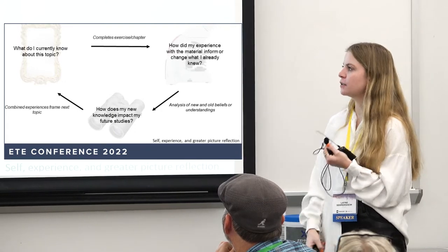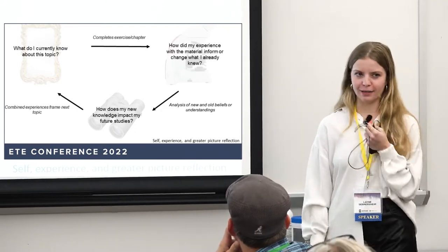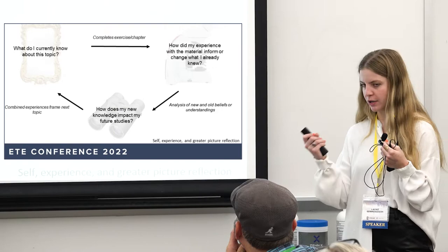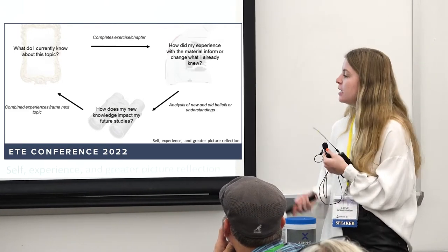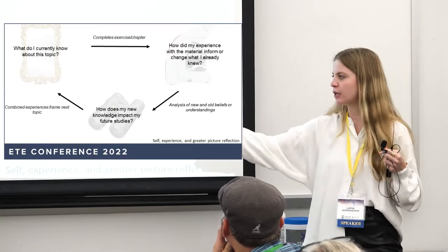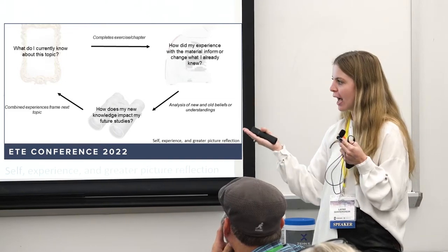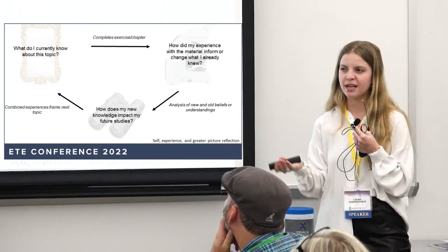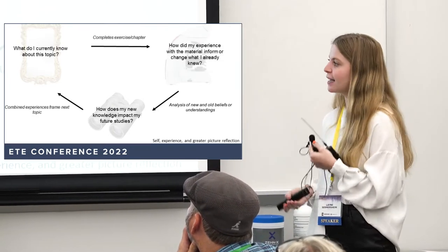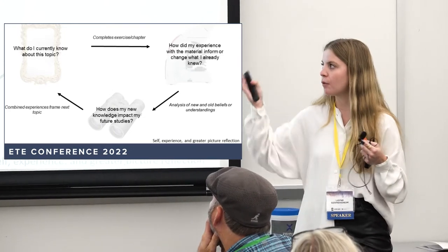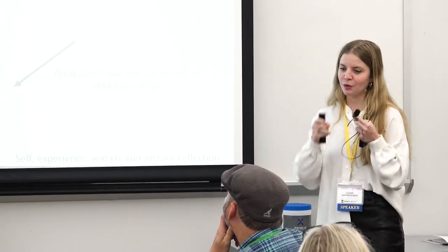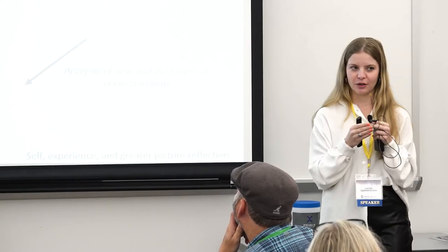How did my experience with the material or the lab inform or change what I already knew? Maybe we learned in lab that our seed beetles really do not like neem powder covering their seeds — they don't like to lay their eggs on those seeds. So we can combine what we already knew with what we learned, analyze that, and then that informs how our new knowledge impacts future studies. Maybe we can design an experiment that tests other types of pesticides, like an essential oil. We create future studies based on what we already knew and what we learned — it becomes a full circle.